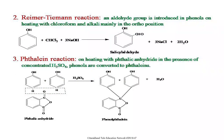The next important reaction of phenol is the Reimer-Tiemann reaction. In this reaction, an aldehyde group is introduced into the phenol when phenol is heated with chloroform (CHCl₃) and alkali (NaOH). The aldehyde group mainly enters at the ortho position, giving an ortho-hydroxybenzaldehyde known as salicylaldehyde.